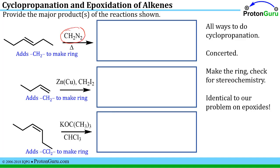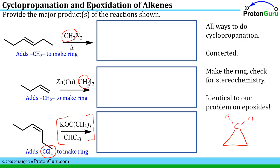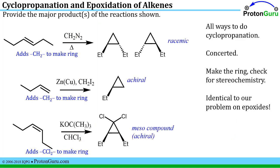Two of the conditions provide a CH2 group — those carbons become CH2s in the cyclopropane ring. The condition with potassium tert-butoxide and chloroform adds a CCl2 instead, putting two chlorines on that carbon. Replacing the oxygen with CH2 gives a racemic mixture for the trans case. However, when it's a CH2, both sides of the ring are the same, so those compounds are actually achiral — unlike the epoxide case. The cis case gives a meso compound, which is also achiral.